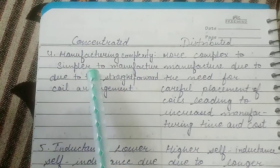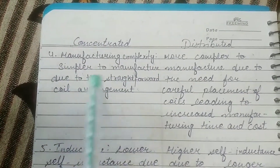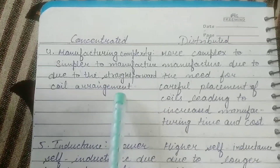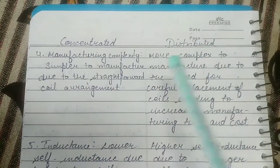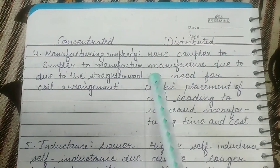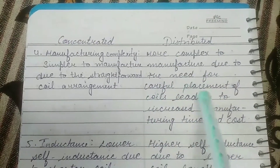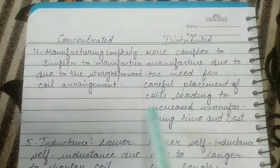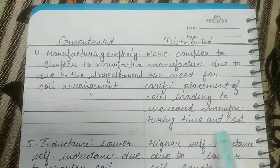The fourth difference is manufacturing complexity. Concentrated windings are simpler to manufacture due to the straightforward coil arrangements. But distributed windings are more complex to manufacture due to the need for careful placement of coils, leading to increased manufacturing time and cost.